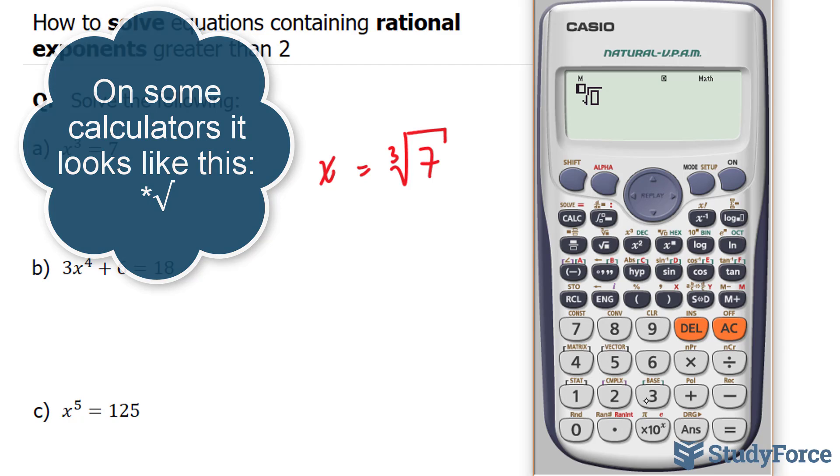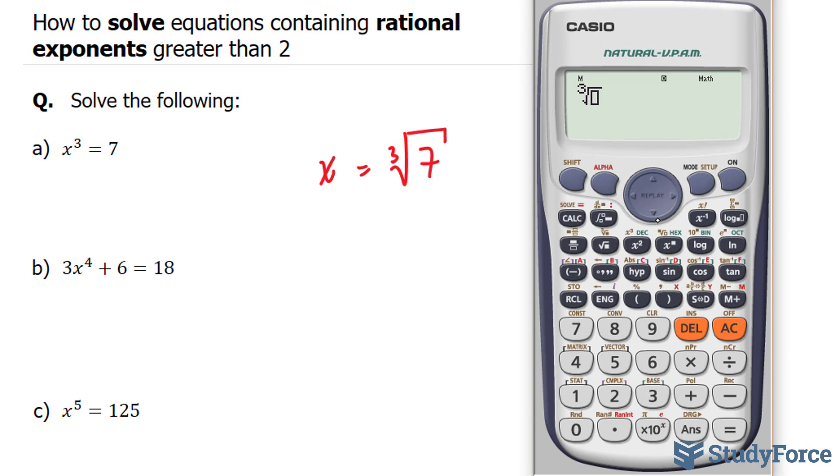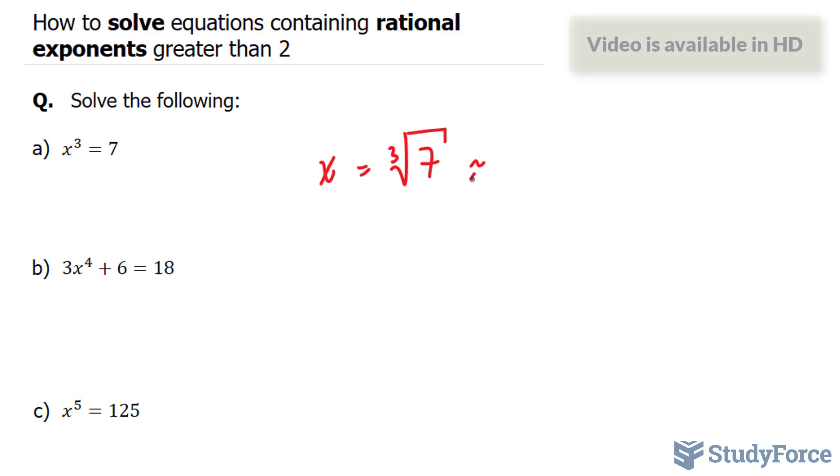You put in your index. And you put in your radicand. Ours is 7. And I end up with 1.91. So approximately 1.91.